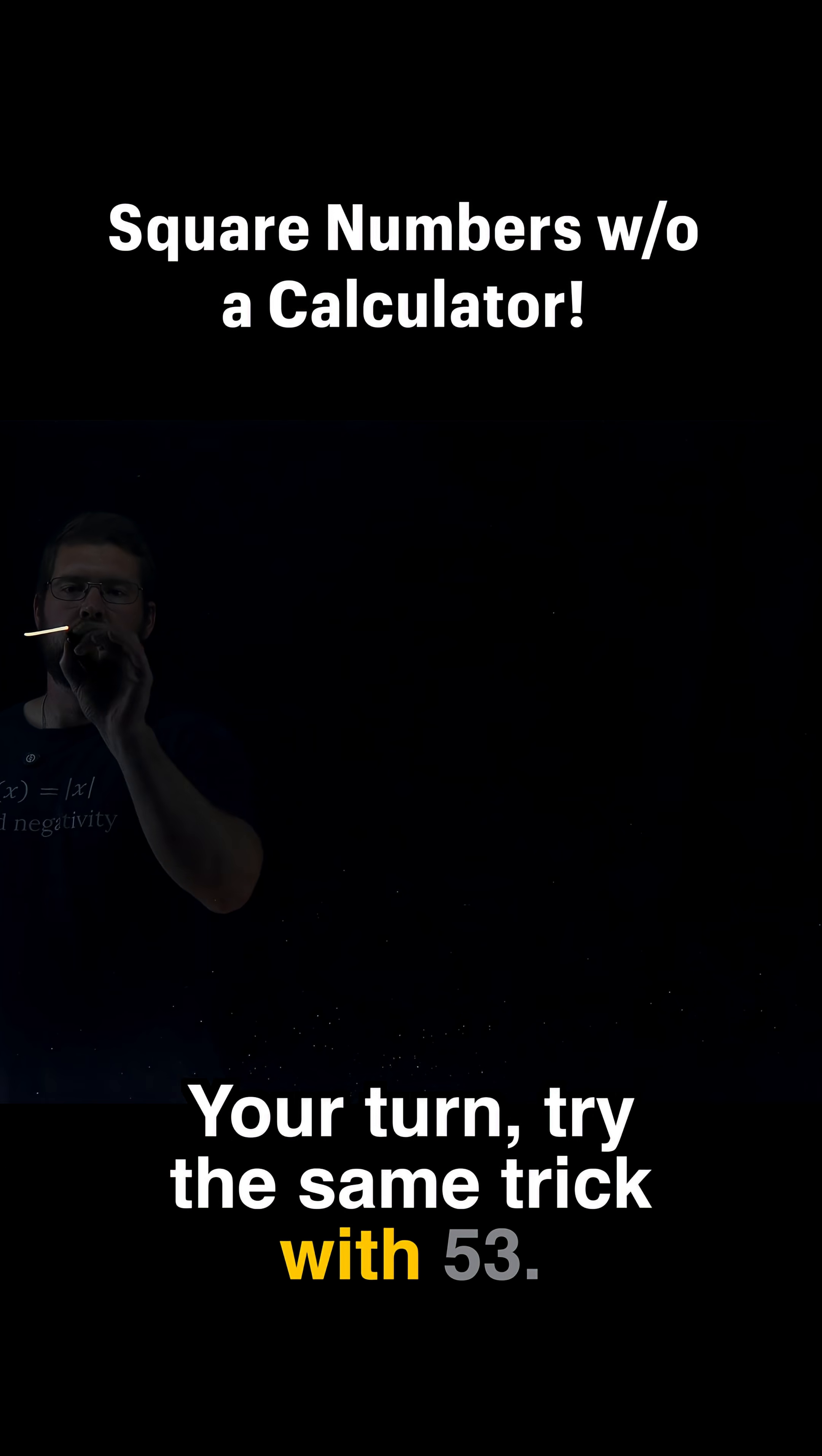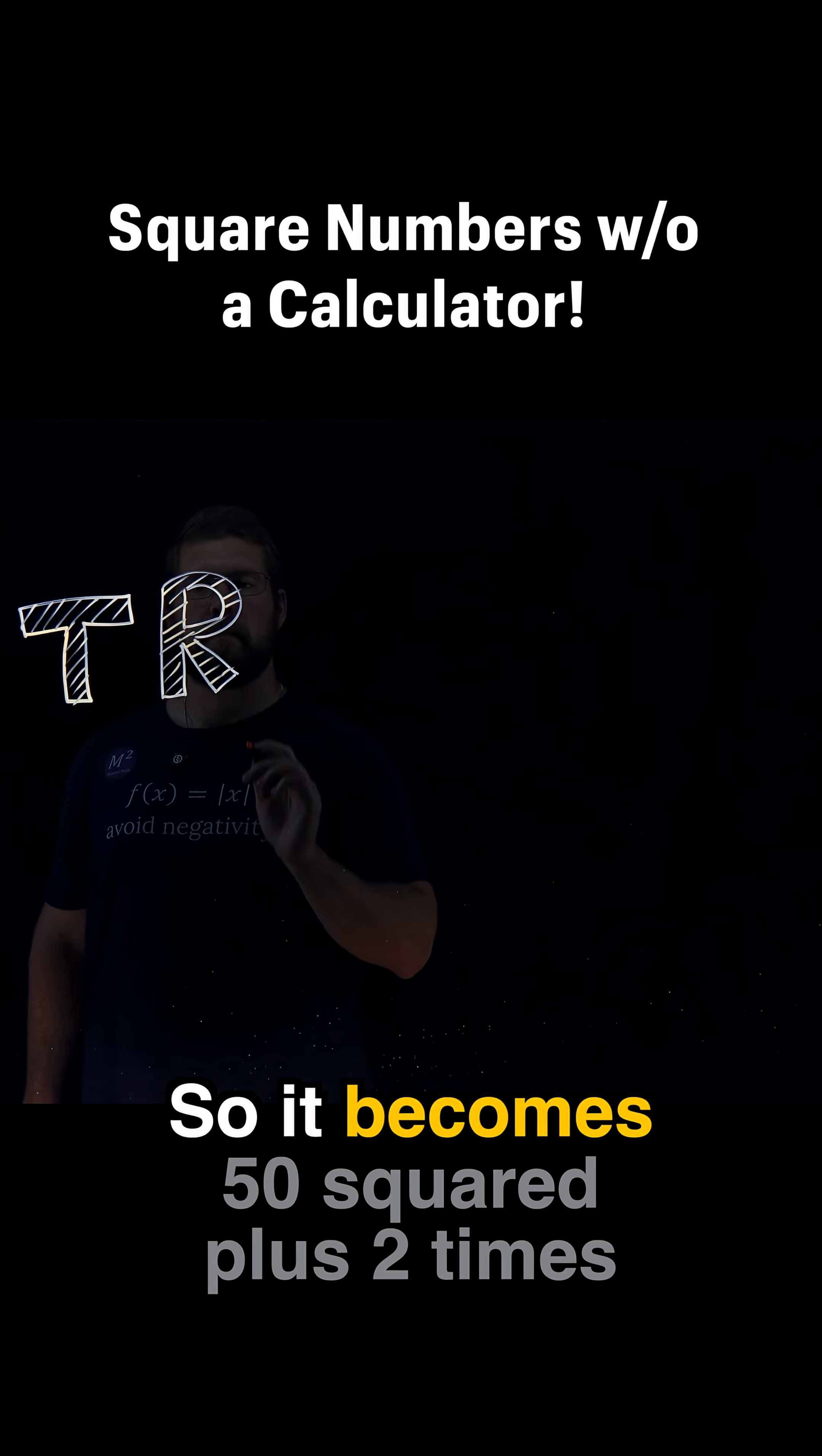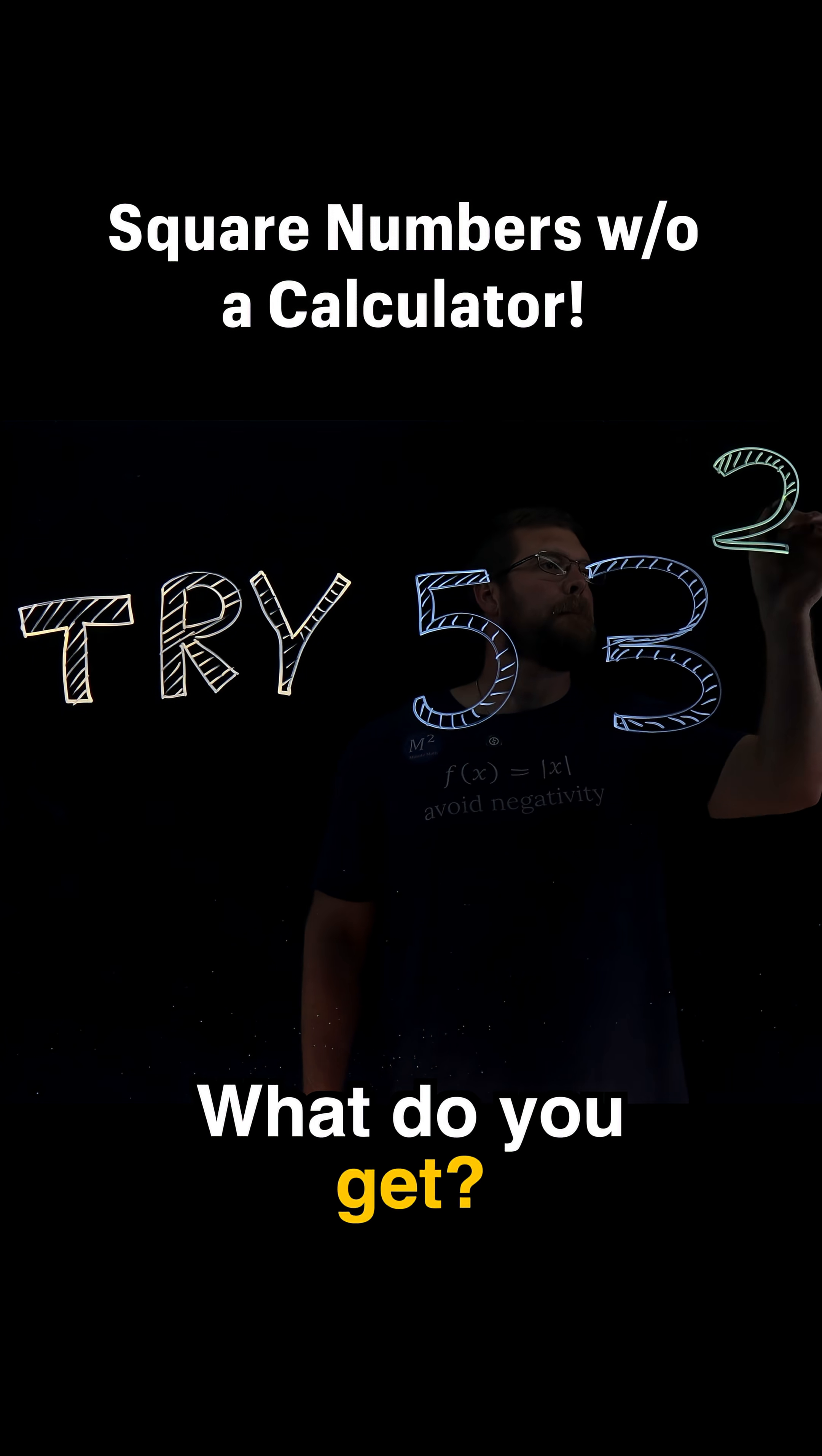Your turn. Try the same trick with 53. This time it's 50 plus 3. So it becomes 50 squared plus 2 times 50 times 3 plus 3 squared. What do you get?